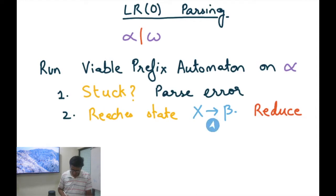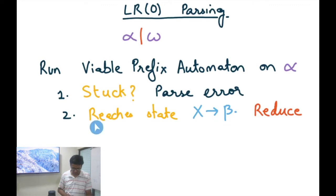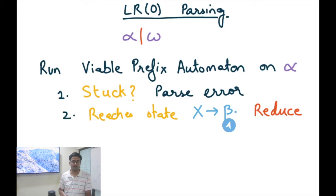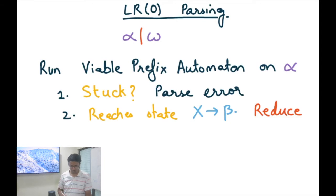If we are using a DFA instead of an NFA, we change this statement to: if the DFA state contains X→β• as one of the items in that state — recall that a DFA state is a subset of NFA states — then we reduce.